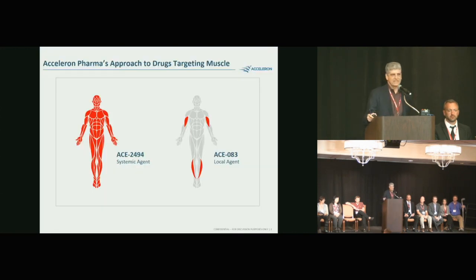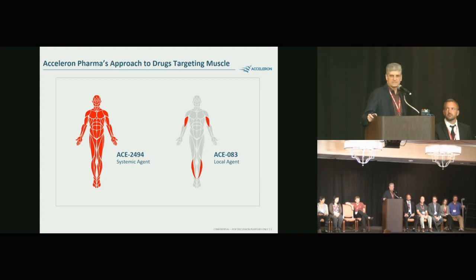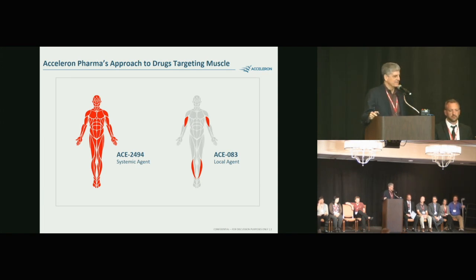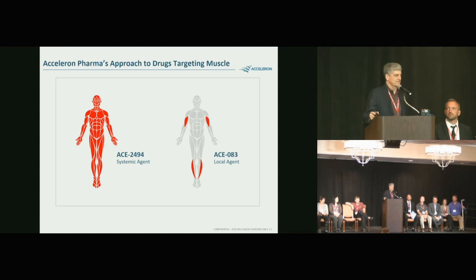Acceleron has been working in the neuromuscular field for about 10 years, doing studies with myostatin inhibitors in Duchenne. With their newer second-generation molecules, FSHD was selected as the first muscular dystrophy to investigate. They also now have a study in Charcot-Marie-Tooth disease.